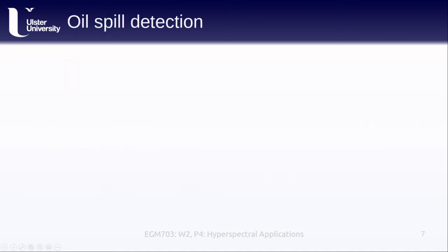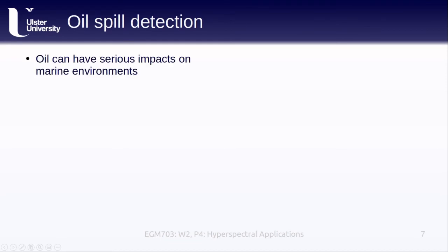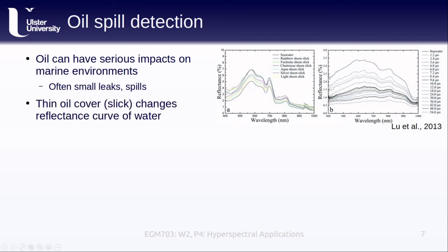The final application we'll cover this week is oil spill detection. As you are hopefully aware, oil can have serious impacts on marine environments. These impacts are not limited to the big attention-grabbing spills like the 2010 Deepwater Horizon disaster in the Gulf of Mexico. Smaller leaks or spills can also be damaging and happen more frequently. The plots shown here from a 2013 paper by Lou and others show how a very thin film of oil, also known as a slick, can change the reflectance curve of seawater — starting with seawater, then different thicknesses of oil slicks marked out. Even a film as thin as 1.2 microns produces a measurable change in the reflectance curve, something we can detect using hyperspectral imaging.